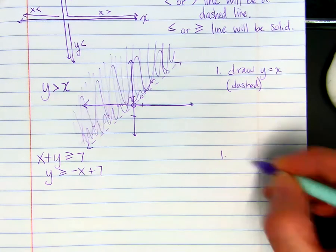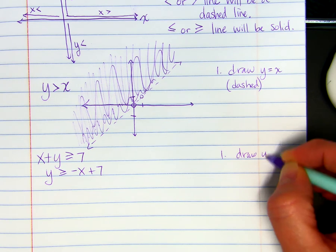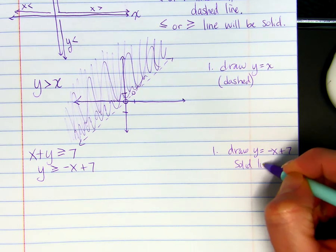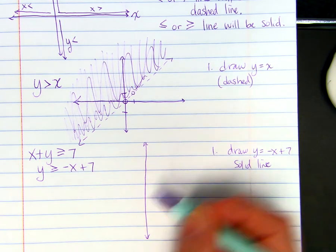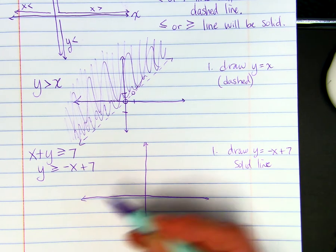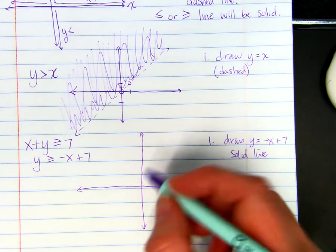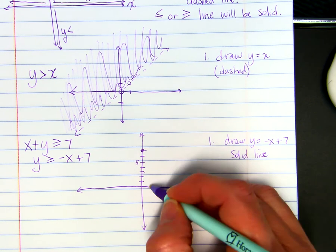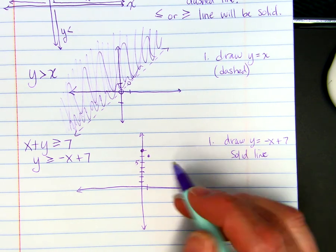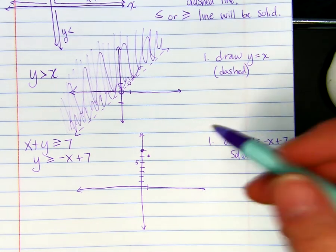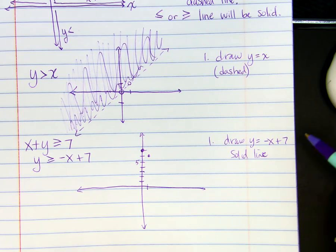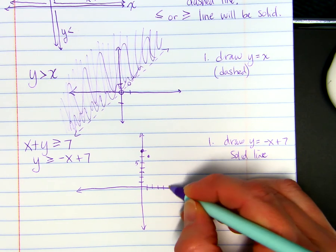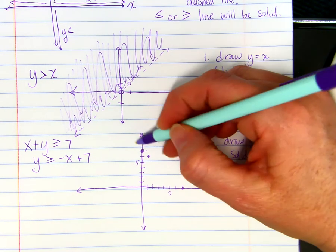So the first thing is we're going to draw Y equals negative X plus 7 and the line will be solid. So we're just going to graph it just like we normally would graph a line. The Y intercept is 7. That just means when X is 0, Y is 7. And the slope is negative 1. So I go down 1 and to the right 1. So when X is 1, Y is 6. And I just draw, actually, when Y is 0, X will be 7. So if I put that dot in there too, I can draw my line.